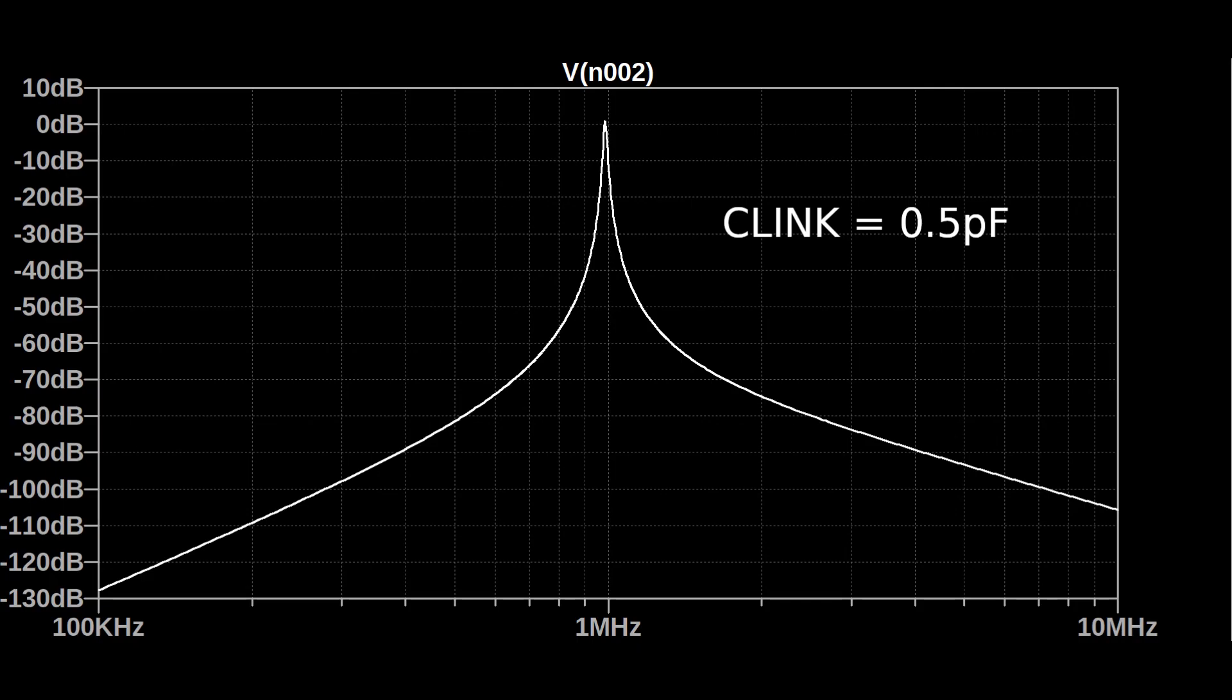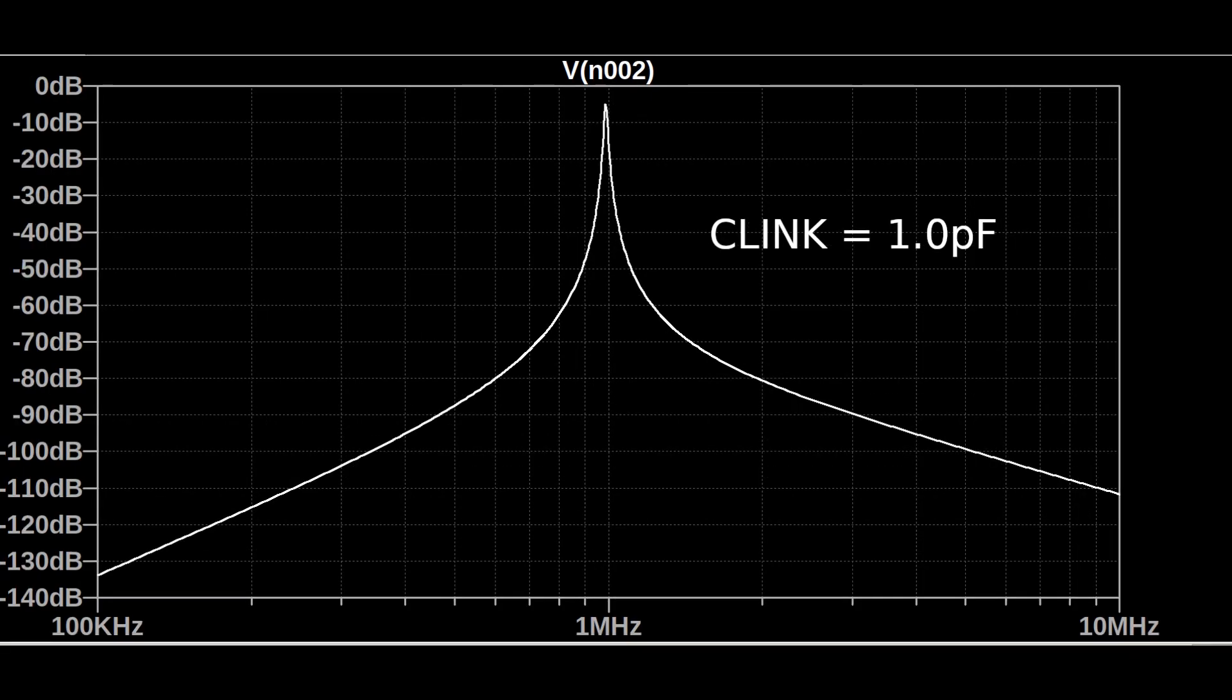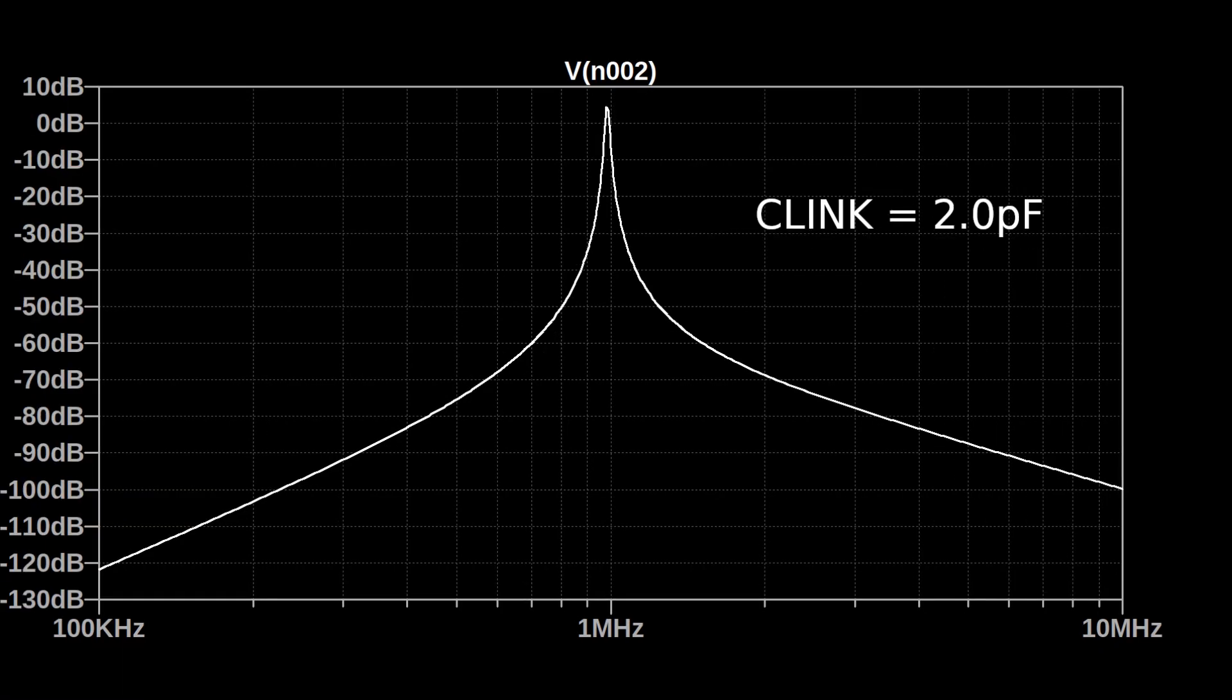If we increase the linking capacitor C4, we can get about the same selectivity, but a much stronger signal. One picofarad of linking capacitor does even better. The amplitude is further improved, and the selectivity remains very good. When we further increase it to two picofarads, we notice that the peak does not get much taller, but the skirts on either side start to move upwards, indicating we are losing some of the selectivity of this crystal radio.